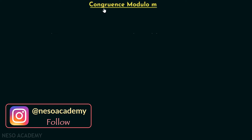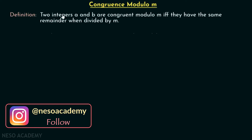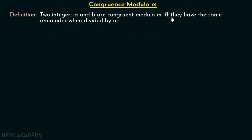Let's first discuss the definition of congruence modulo M. Two integers A and B are congruent modulo M if and only if they have the same remainder when divided by M. We are considering two arbitrary integers A and B, and saying that A and B are congruent modulo M if and only if, when we divide these two integers by M, they will leave the same remainder.